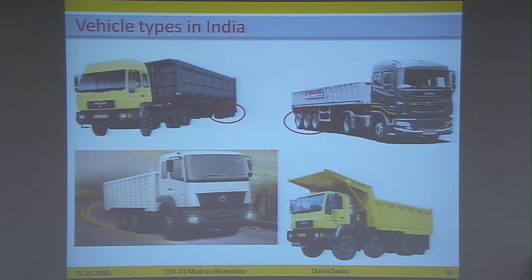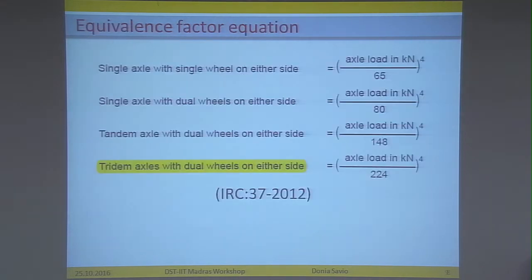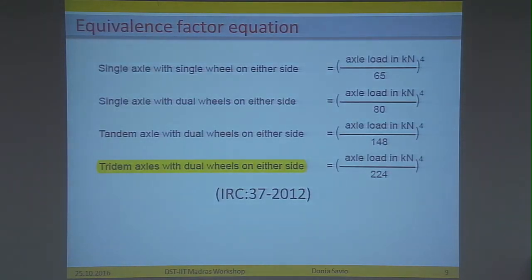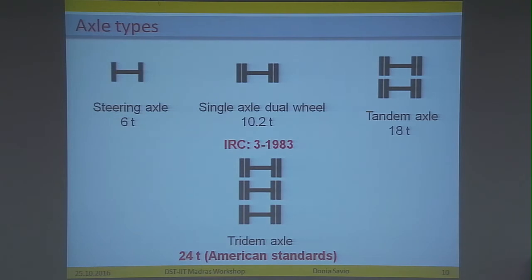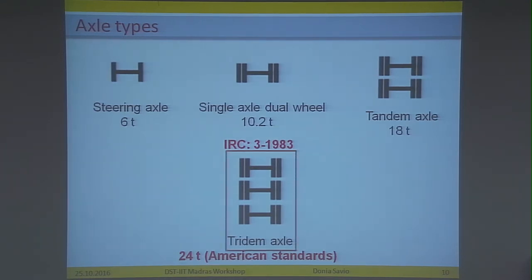We see that most vehicles on Indian highways have tridem axles, but we do not know their legal axle limits. Unfortunately, IRC 37 does mention tridem axles for the calculation of equivalence factors. This is the legal axle limit for the different axle types found in India — the first three are from IRC 3 1983, and for this project I used 24 tons as the legal axle limit for the tridem axle, taken from American standards.